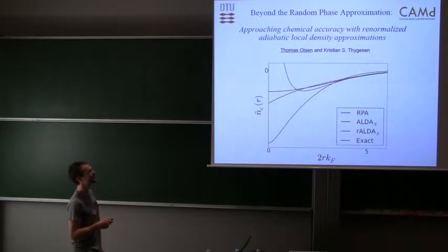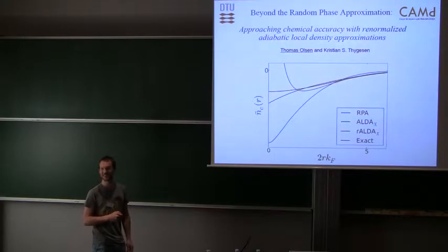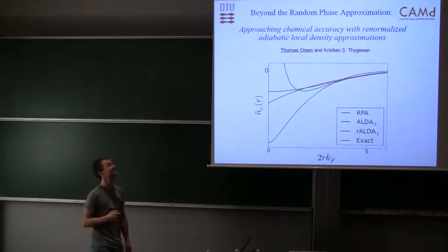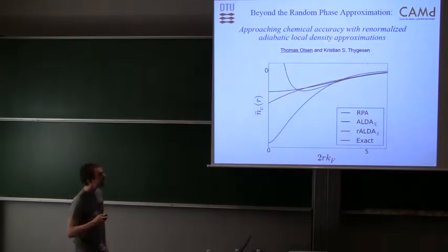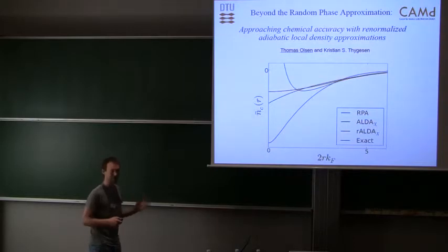A lot of people tend to think that the random phase approximation is very good because it's very time consuming to do, but it turns out it's actually not. You need to look at the homogeneous electron gas and look at the correlation hole calculated in RPA and compare with the exact one. You see that it's quite a bit off, but it's good for some cases.